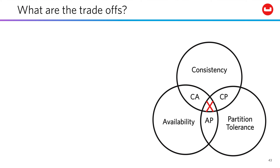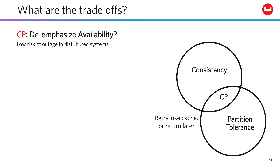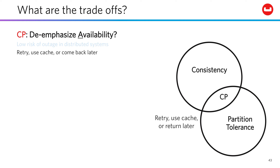Well, this all means there are trade-offs — life's full of choices. So should you de-emphasize availability and go with a CP system? There's a pretty low risk of outage in distributed systems; cloud companies would be out of business if this weren't true. So what is the impact? Well, if there's an outage, the user needs to retry their request — it may be momentary, or, worst case, come back later. This is where you're at with Couchbase and Mongo.